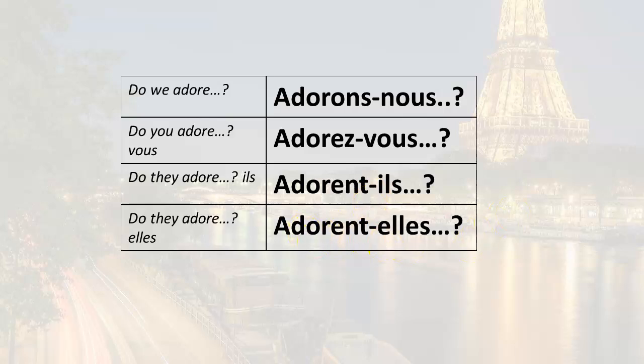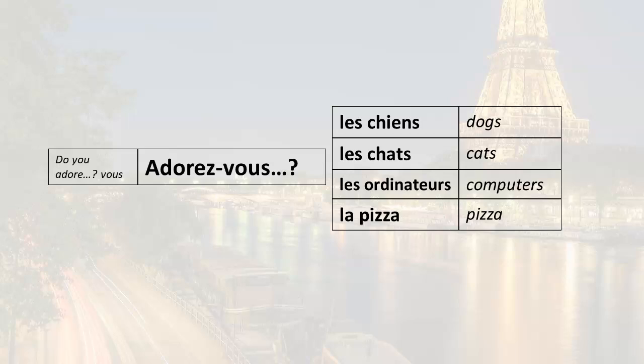So now let's put it all together and ask a few questions. I've chosen vous. Adorez-vous — do you adore? Remember this can also mean do you love or do you really like. So let's go with do you really like. Do you really like dogs? Adorez-vous les chiens? Do you really like cats? Adorez-vous les chats? Do you really like computers? Adorez-vous les ordinateurs? Do you really like pizza? Adorez-vous la pizza?